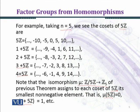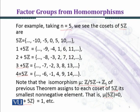We can see that 5Z maps to 0, and 1+5Z maps to 1. Similarly, 2+5Z maps to 2, and 3+5Z maps to 3. If we repeat this, 5+5Z again maps to 0, because whichever class an element belongs to, it maps to the representative of that class.